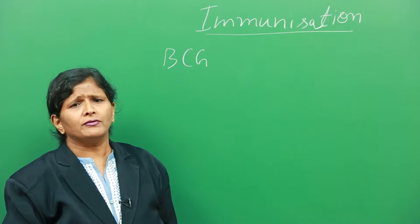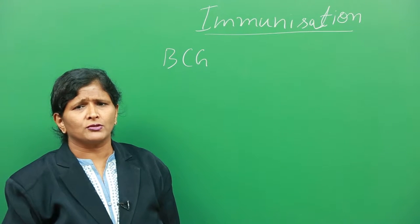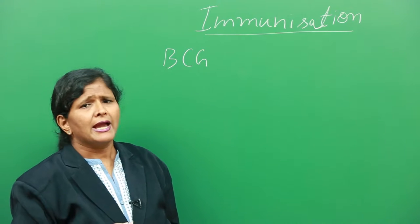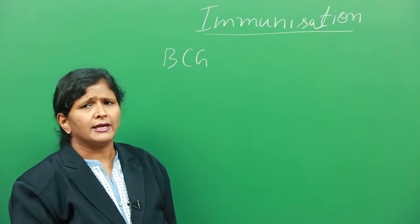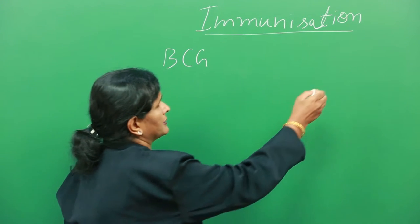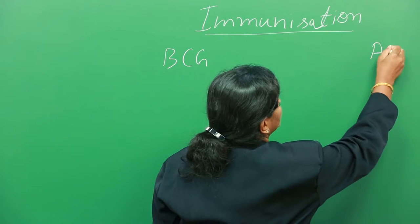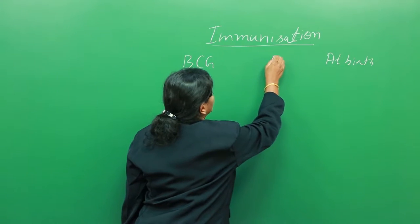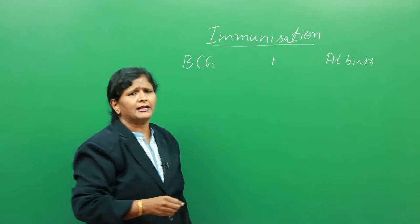BCG vaccine is attenuated bacteria against tuberculosis. It is given as an intradermal dose and is normally given at birth. Only one dose is given at birth.